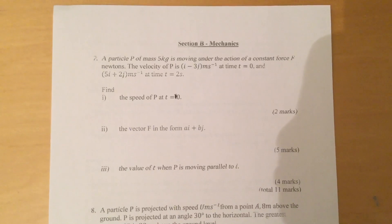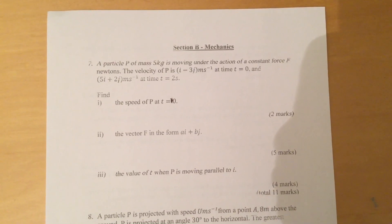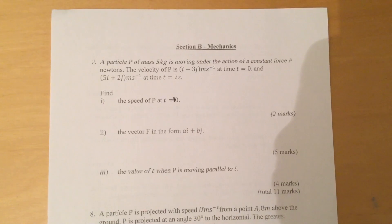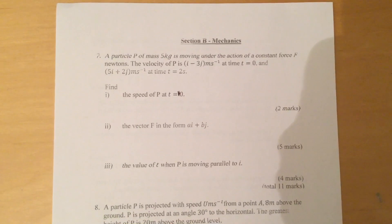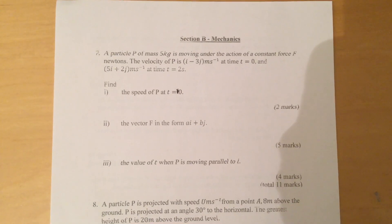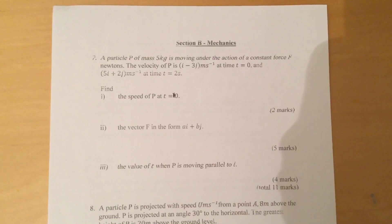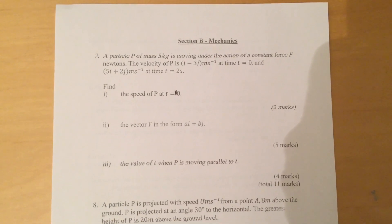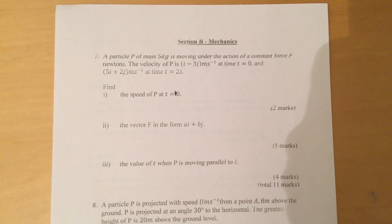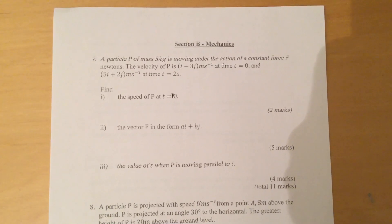A particle of mass 5 kg is moving under the action of a constant force F newtons. The velocity of P is i minus 3j meters per second at time t equals 0, and 5i plus 2j meters per second at time t equals 2 seconds.